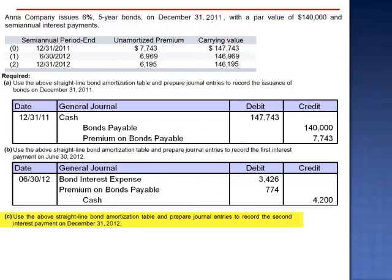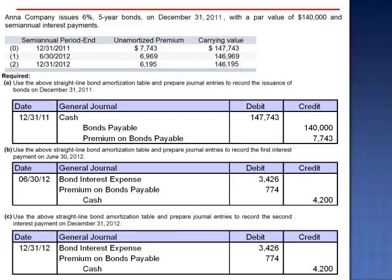Letter C asks us to prepare the journal entry to record the second interest payment on December 31, 2012. They already told us this is the straight-line method, so we know the journal entry stays the same for each of the 10 semi-annual payments. This problem would have been more interesting had they not told us whether they were using the straight-line method or the effective interest method.